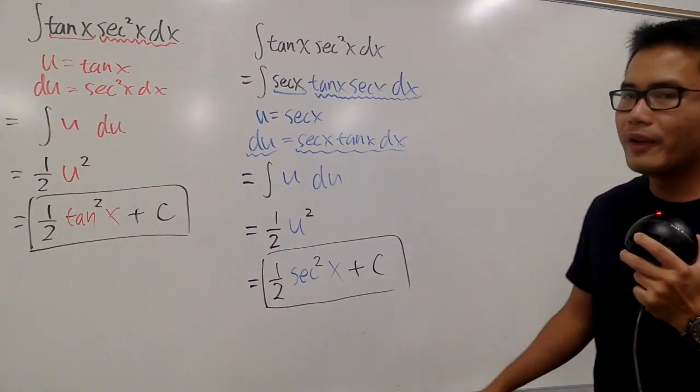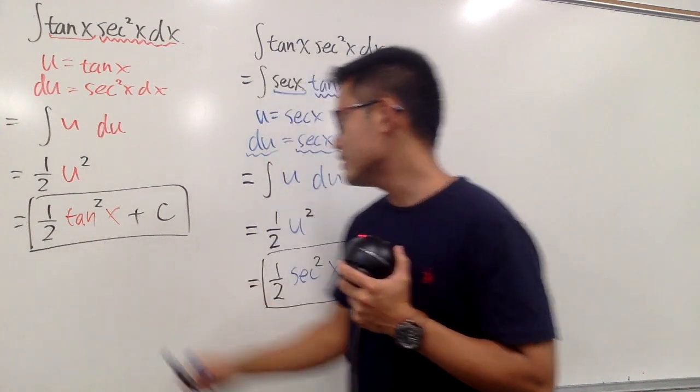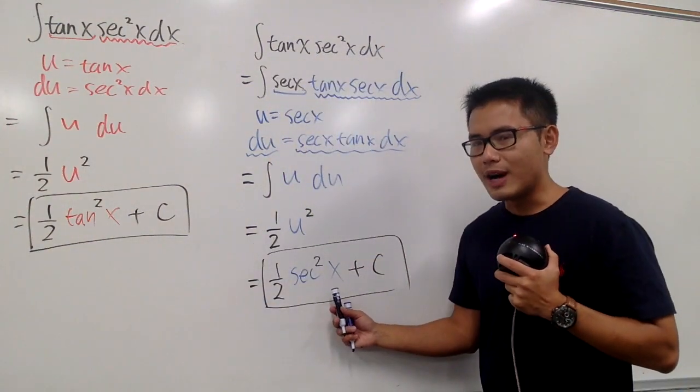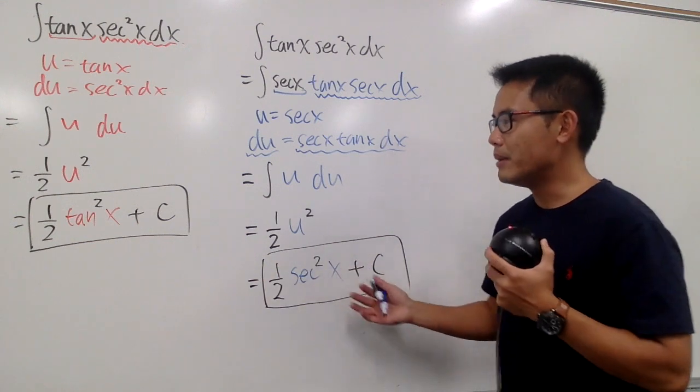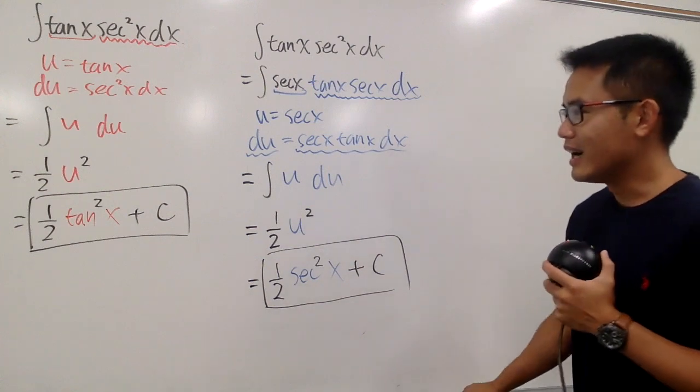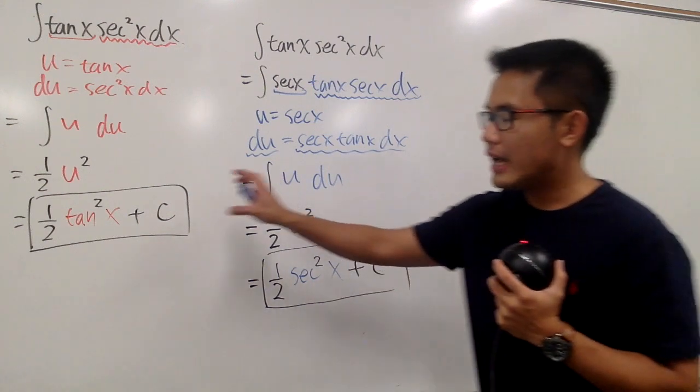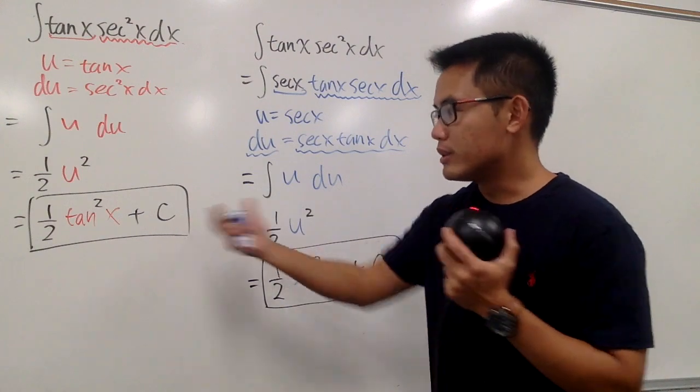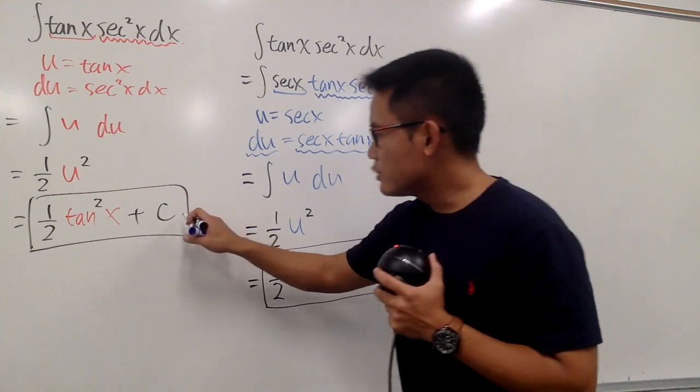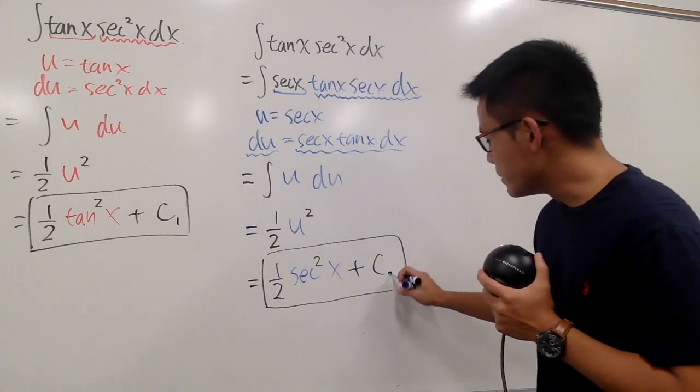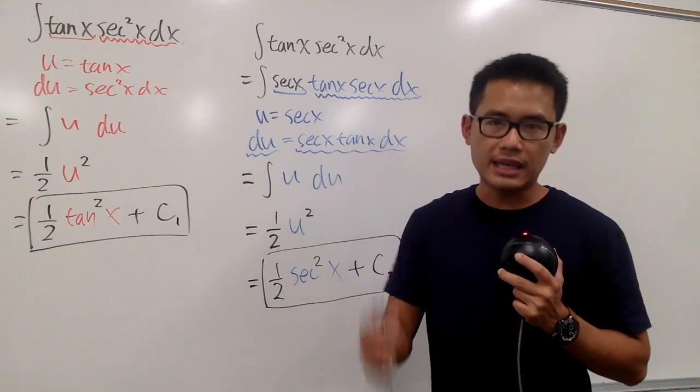Now, you may be wondering. This is the answer that we got earlier, involving tangent. This is the result that we got right now, involving secant. Which one is actually correct? Or maybe they are both correct? Or maybe we did something wrong? Well, in this case, they are actually both correct. But they look different because of the constant c. So what we should be doing is that this right here should be c1, and this right here should be c2. The result of the integration could be off by a constant.